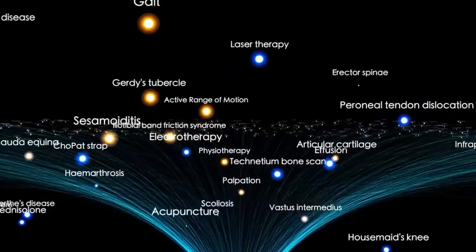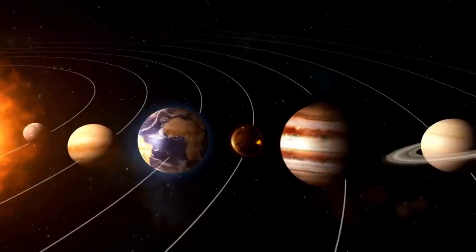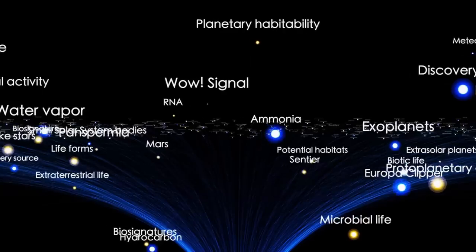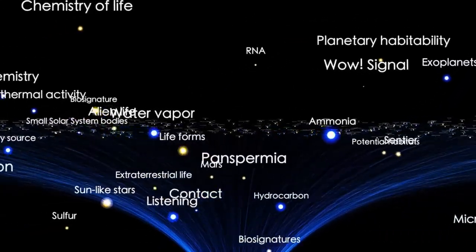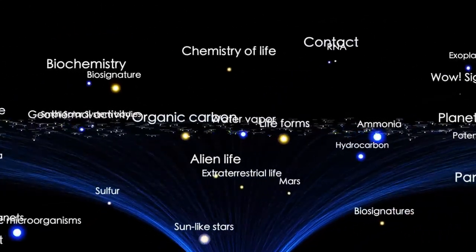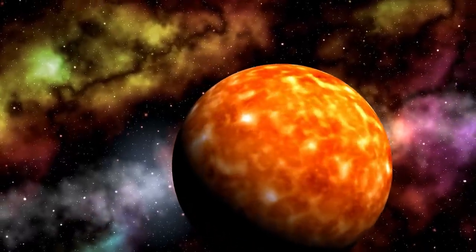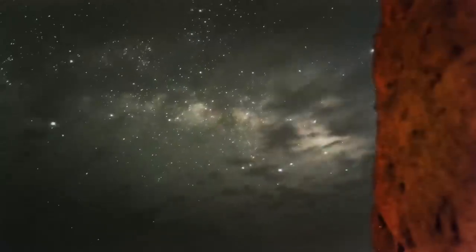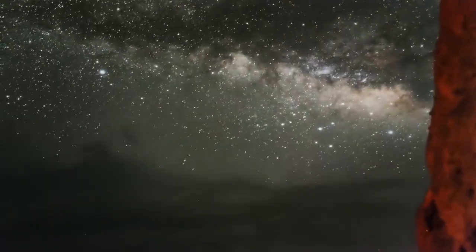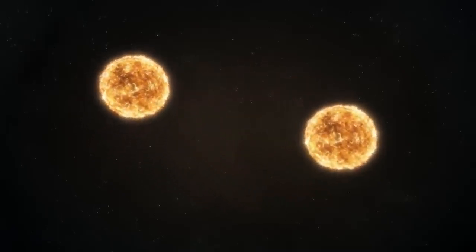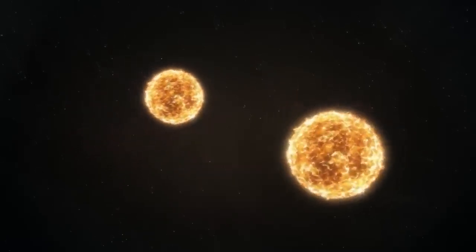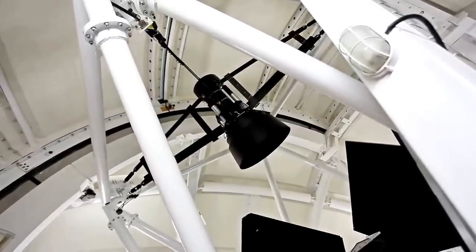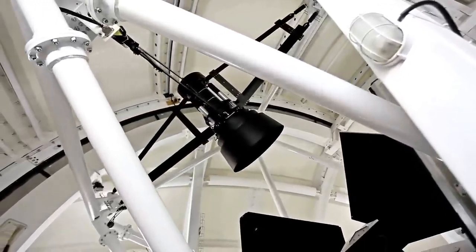Here's the thing: when we observe stars, we're not actually seeing them as they are in the present moment. The light we see from stars like Betelgeuse takes time to travel to Earth. Betelgeuse, one of the most fascinating stars in our night sky, is located approximately 725 light years away from Earth. This means that the light we observe from it today actually began its journey toward us around 725 years ago. In other words, when we look at Betelgeuse through telescopes or even with the naked eye, we are witnessing the star as it was centuries ago, not as it exists in the present moment. This concept, known as the light travel time effect, is fundamental in astronomy and applies to all celestial objects beyond our solar system.